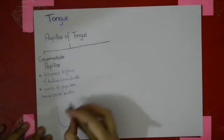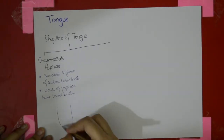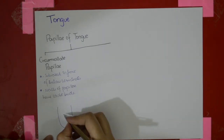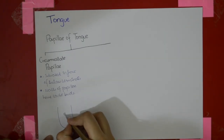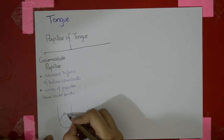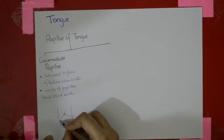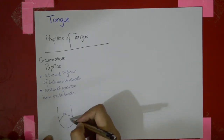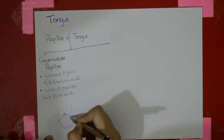For your understanding, I'm going to draw a little bit. So this is the tongue, this is the foramen cecum, this is the sulcus terminalis, and over here we see these circumvallate papillae.